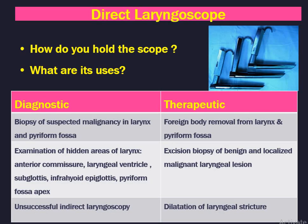Next instrument is the direct laryngoscope. The commonly asked questions are how do you hold the scope and what are its uses. The scope is always held with the left hand. The diagnostic uses are: biopsy of suspected malignancy in the larynx and piriform fossa, and examination of hidden areas of the larynx like the anterior commissure, laryngeal ventricle, subglottis, infrahyoid epiglottis, and piriform fossa apex.